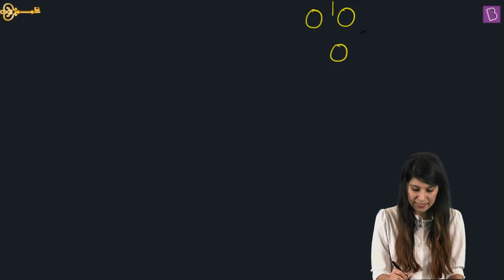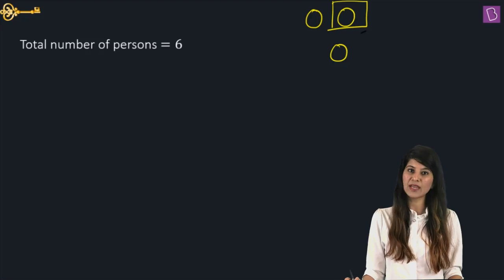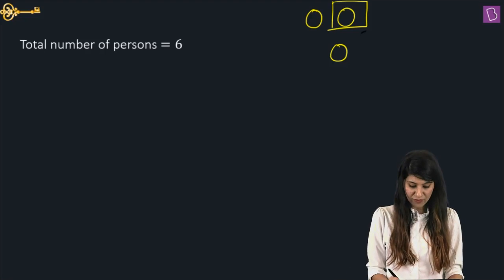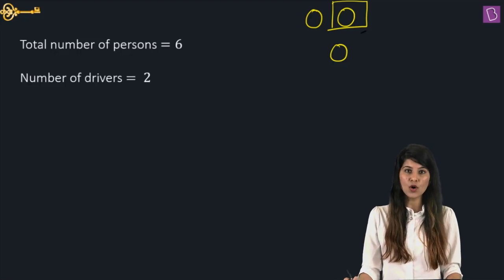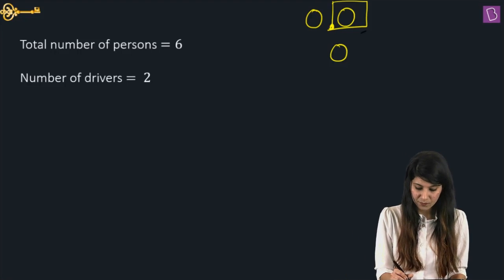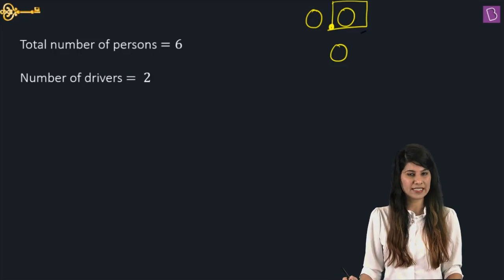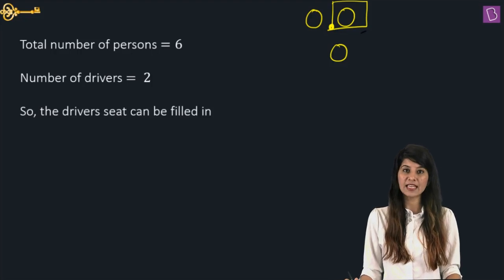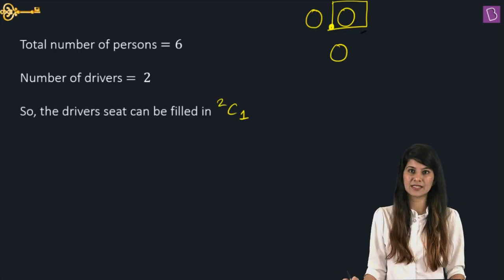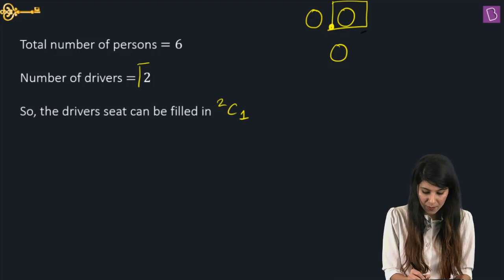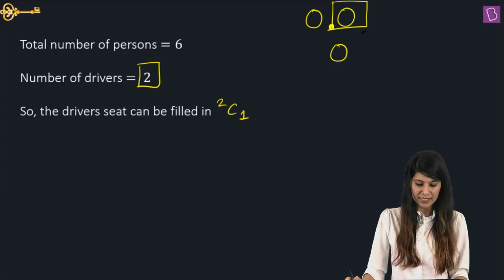One seat will be filled by the driver. In total, how many persons do we have? Six. Out of which, how many drivers do we have? Two drivers. So one person out of these two will sit in the driving seat. In how many ways can we fill this driving seat? 2C1 ways — selecting one driver out of two drivers.